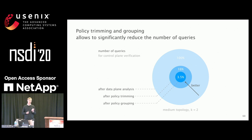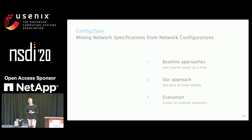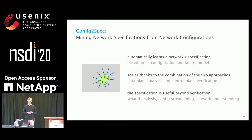With that, I'm almost at the end. There is more information in the paper with additional experiments, so I encourage you to check it out. Config-to-spec is a system that automatically learns the network specification based on the configuration and the failure model. It does this in a scalable manner, thanks to this novel combination of data plane analysis and control plane verification. This specification can be used beyond just verification — you can also use it for what-if analysis, config streamlining, or just to get a better understanding of what is going on in your network.